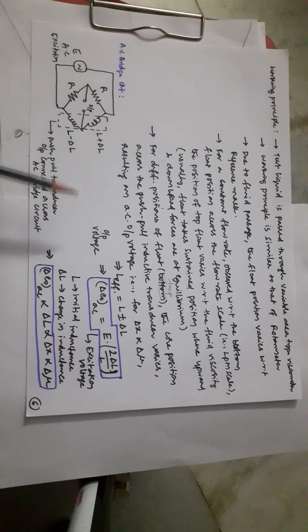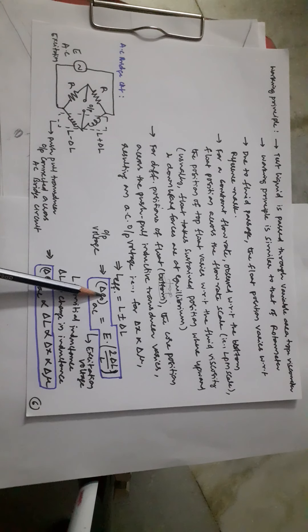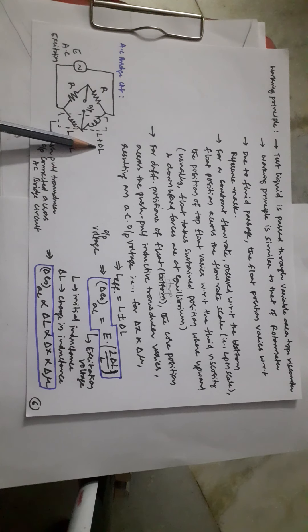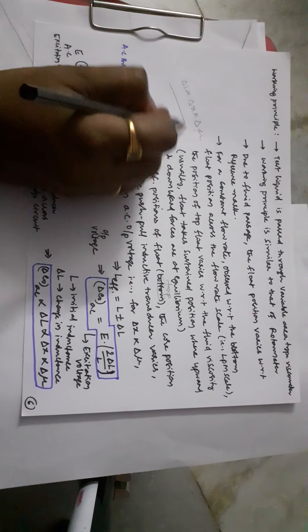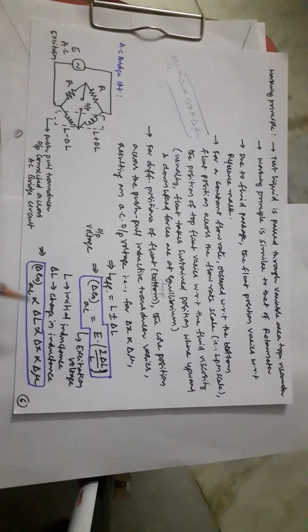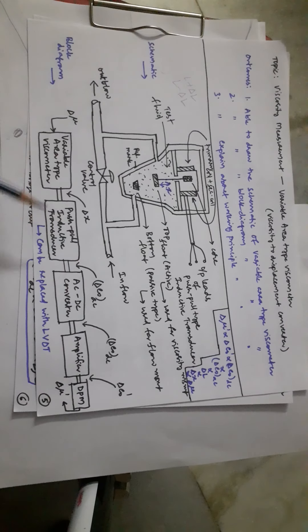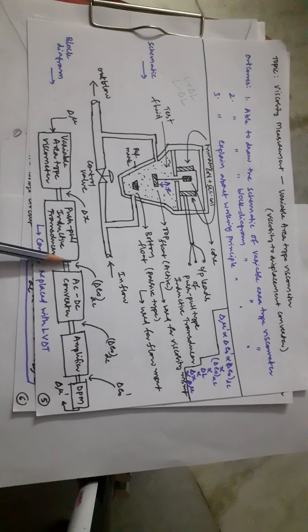The AC output voltage is: delta E₀_AC = E × (2 × delta L) / L, where E is the excitation voltage — derived previously when discussing the push-pull inductive transducer. Since L is constant, delta E₀ is proportional to delta L. Since delta L is proportional to delta x, which is proportional to delta mu, we have the chain: delta E₀_AC ∝ delta L ∝ delta x ∝ delta mu. This confirms the block diagram: variable area type viscometer converts change in viscosity to change in top float displacement, which converts to change in output voltage.